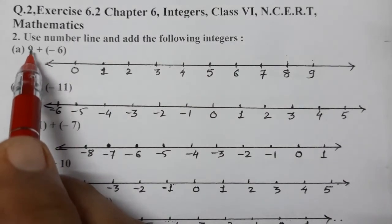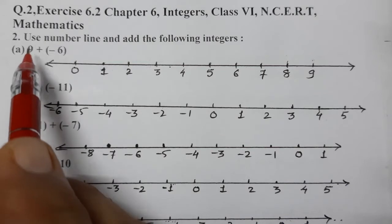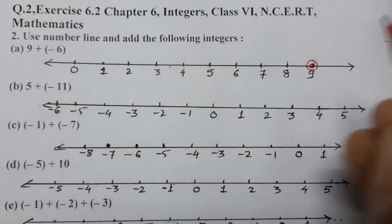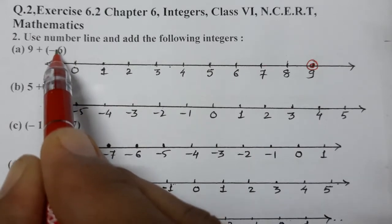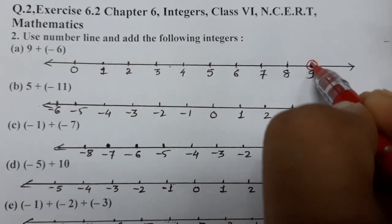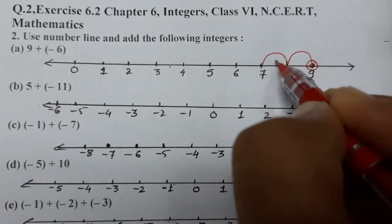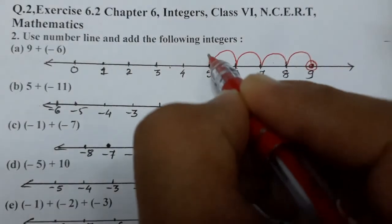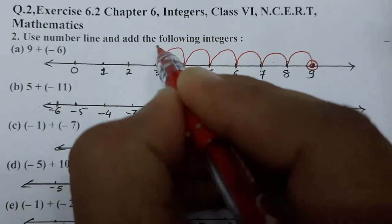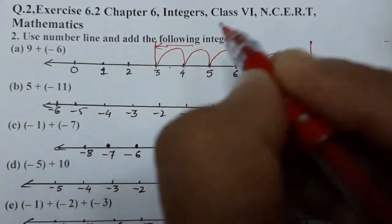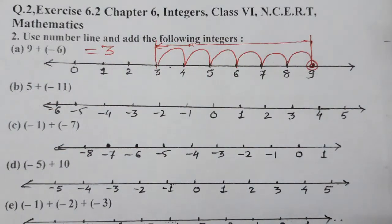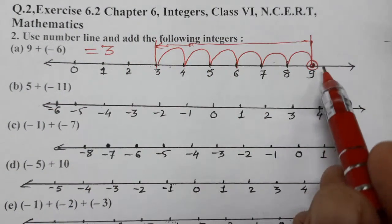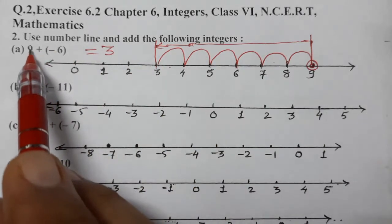First one is 9 + (-6). We start with the first number, 9, on the number line. Since it is minus 6, minus shows we have to move towards the left. So from 9, we move six points towards the left — one, two, three, four, five, and six — and we reach at 3. So the answer is 3.